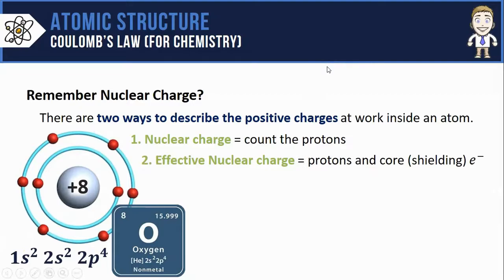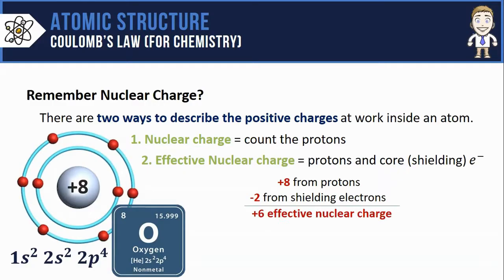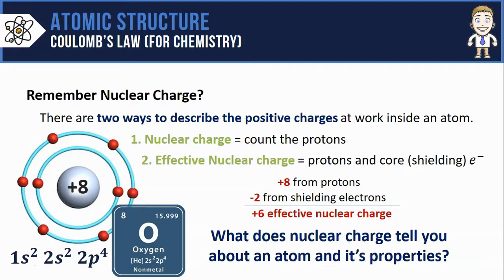We've also got the effective nuclear charge which takes those eight protons into account but also considers the core electrons that cancel out or shield some of that plus 8 charge from the protons. Here this oxygen atom has two shielding electrons leaving us with an effective nuclear charge of only plus 6. In this video we're going to look at what nuclear charge tells you about an atom and its properties.